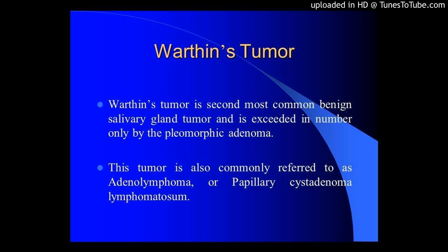Histopathological correlation could be done in 24 cases. 19 out of 24 cases were confirmed as Warthin's tumor. The 5 cases with discordance were analyzed for potential diagnostic pitfalls.